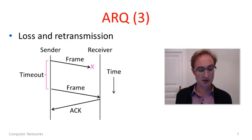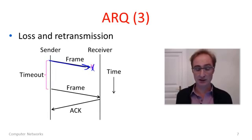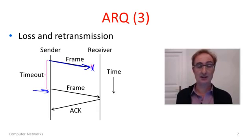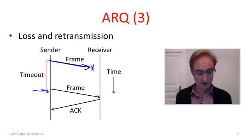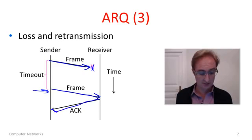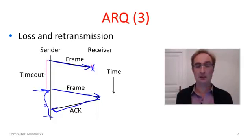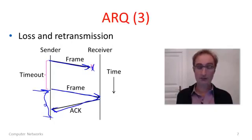Here's the loss and retransmission case. The frame is sent but doesn't make it to the receiver correctly. After a certain amount of time passes, the sender says something must have gone wrong and automatically resends the message. This time the message gets through, the receiver sends an ACK, and both sides are happy. This could go on if more frames were lost — the sender would repeat again and again.